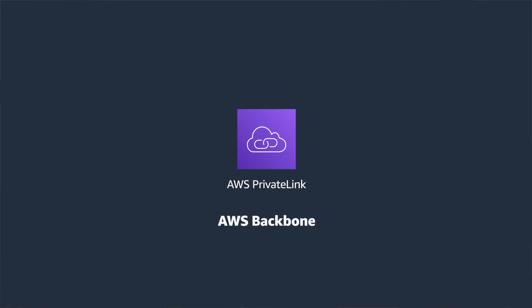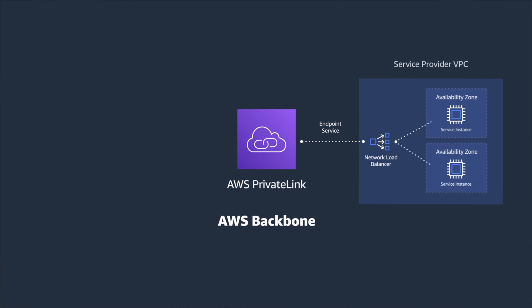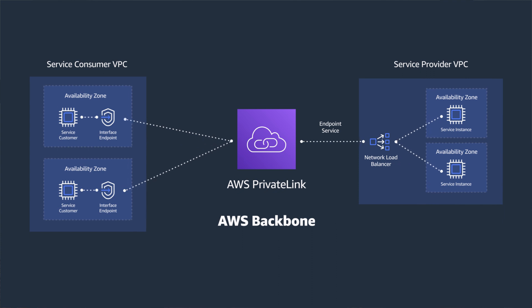Now let's take a deeper dive and see how PrivateLink works. We set up PrivateLink by first creating an endpoint service in the service provider. The endpoint service is associated with a network load balancer, or NLB, for the provider service. For high availability and low latency, I recommend using an NLB with targets in at least two availability zones within the VPC. Access can be controlled by allowing principals such as IAM users, IAM roles, or AWS accounts to the allow list for the service.